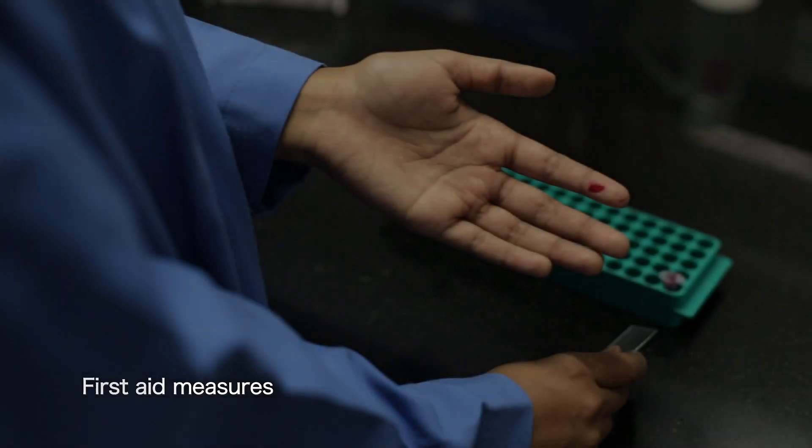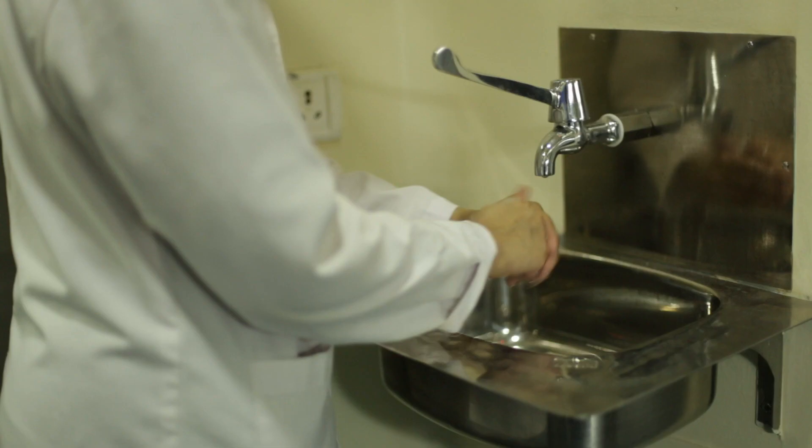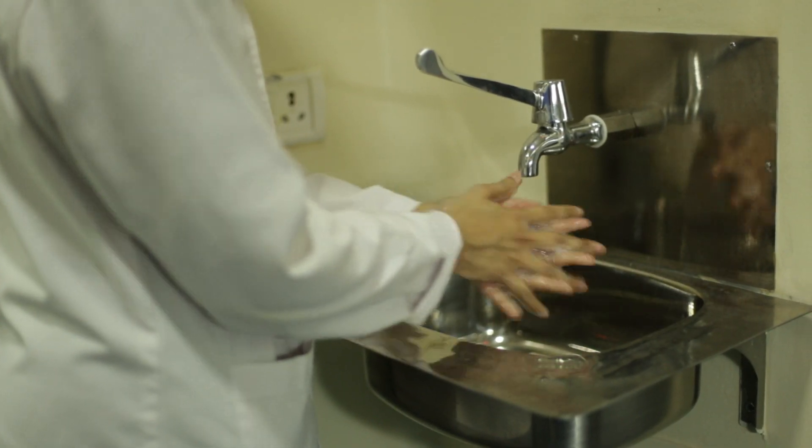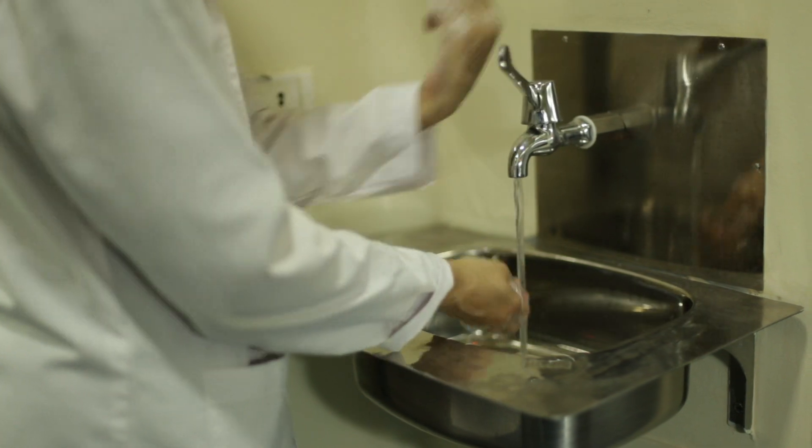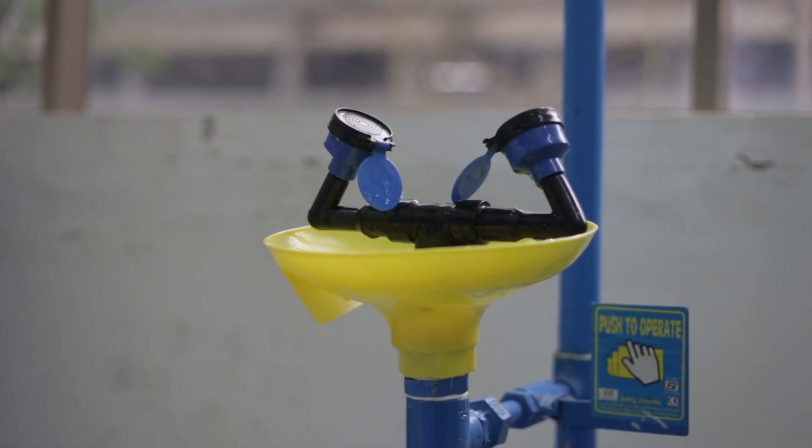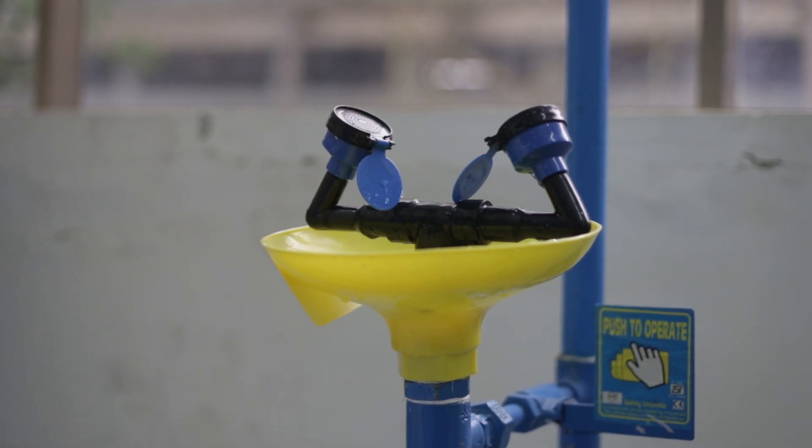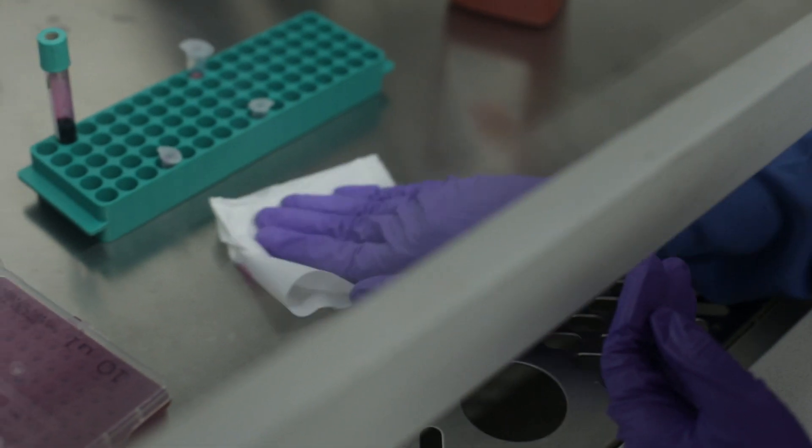In case of injury from any contaminated items, wash the area with soap and water. Report the injury to the principal investigator and to the medical officer immediately. In case of splashes to the eyes, flush the eyes continuously with water. Be prepared for dealing with spills. This can happen inside the biosafety cabinet or outside the cabinet.